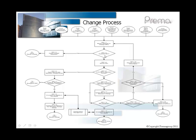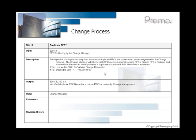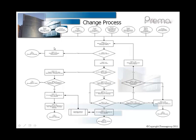300.1 shows the filtering and registration of an RFC. Inputs for the change management process — that is the description for that particular 300.1 sub-process — and the same structure applies for sub-processes 2 through 9.